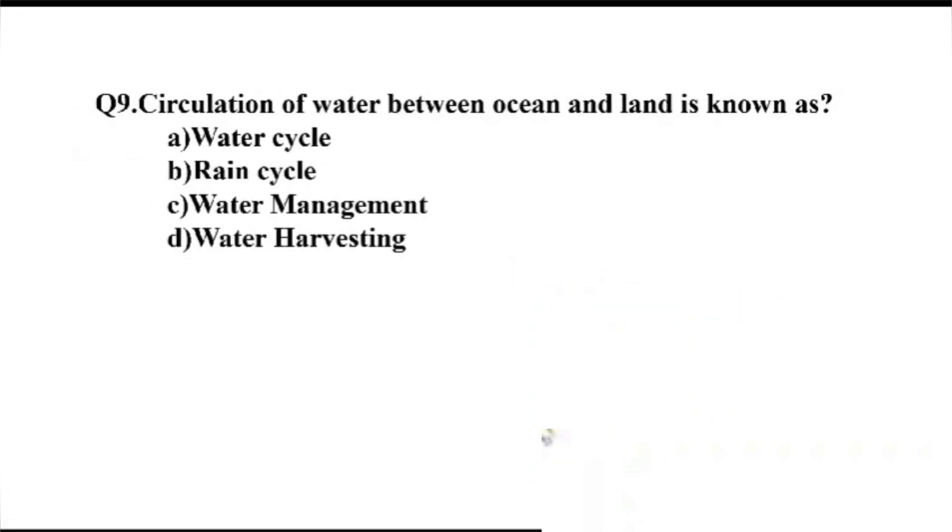Question number 9. Circulation of water between ocean and land is known as dash. Option A, water cycle. B, rain cycle. C, water management. D, water harvesting. The right answer, Option A, water cycle.